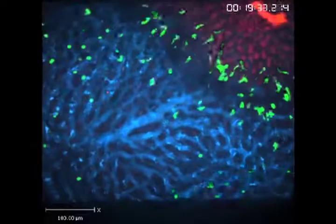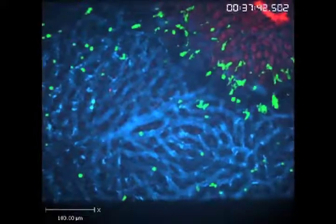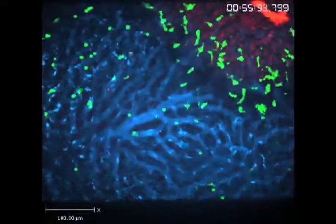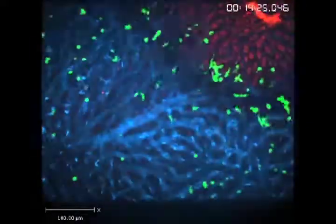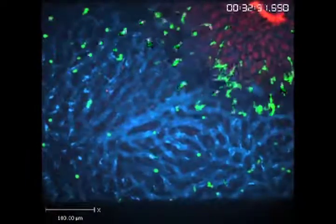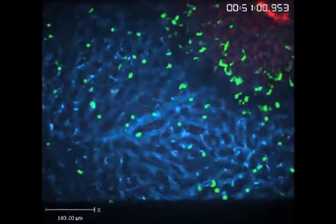So what you see in this video is a slight enlargement. Again, the red is the dead cells, and you can see the green cells now running through the vasculature, which is blue, towards these dead cells.